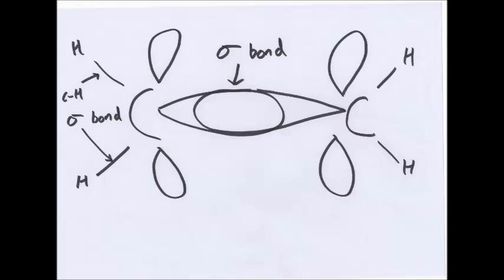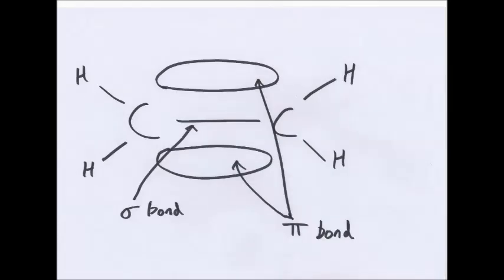But there are also p orbitals, and what happens is these overlap as well, and become like this, and this forms a pi bond. That's very simple, all you have to do, you just know those two drawings, and just label them. Later on we'll see how the pi bond and sigma bond control reactions and stuff like that.